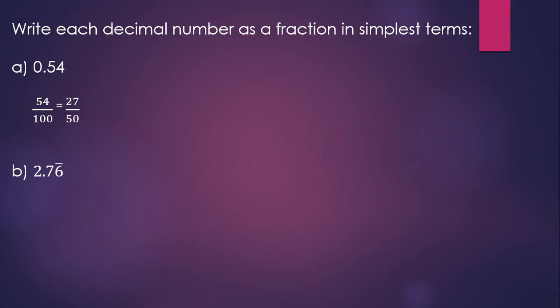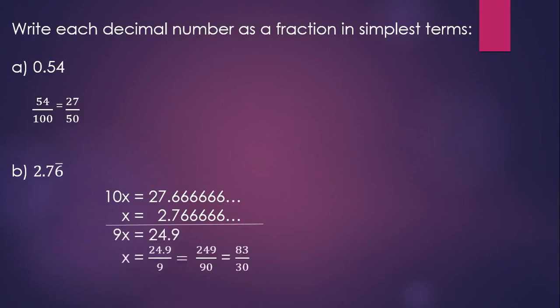The second decimal number is a repeating decimal. So we'll say that x equals that repeating decimal. And since there's one repeating digit, we'll multiply both sides of this equation by one factor of 10. If we subtract on both sides, we'll be subtracting off all those repeating sixes. And we can divide both sides by 9, which does give us something that looks like a fraction, but it's not in the right form because there's a decimal on the top of the fraction. So if we multiply numerator and denominator of 24.9 over 9 by 10, we'll have 249 90ths. And dividing numerator and denominator by 3 gives us 83 30ths.